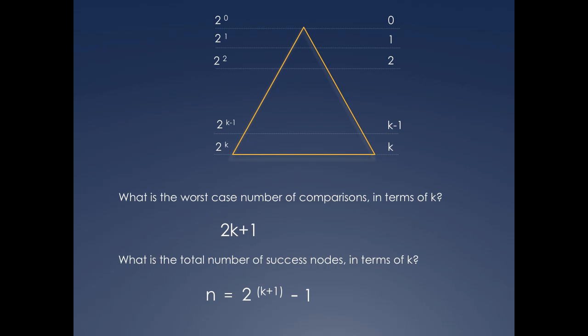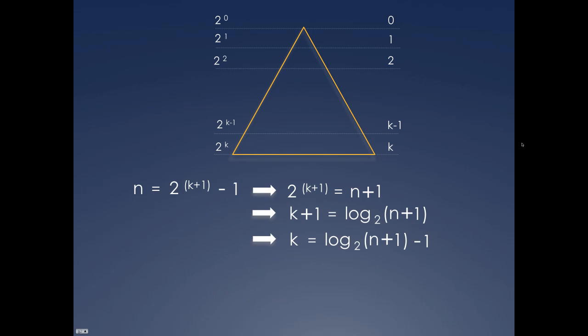As you see, the expression for the number of nodes helps us get k in terms of n. k is log n plus 1 to the base 2 minus 1. We can plug in this value of k in the expression for the worst case number of comparisons, which works out to 2 times log n plus 1 to the base 2 minus 1.